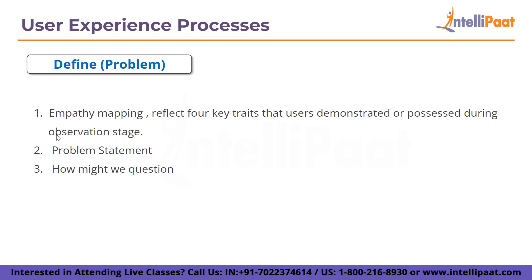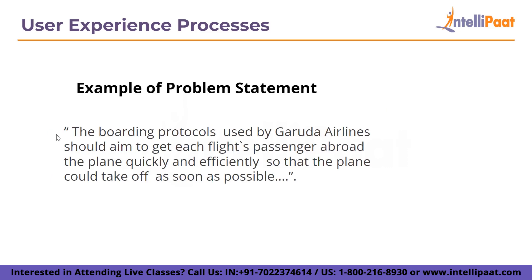The next step is defining. Before the product team starts working, one of the most crucial stages of UX design is completed — a product's context of existence must be understood before it can be built. The basis for the finished product is laid during the product definition phase. Stakeholders and UX designers collaborate to develop the product's highest-level concept. In defining the problem, you perform empathy mapping — reflecting four key traits demonstrated during an observation stage — create a problem statement, and ask 'How might we?' questions.